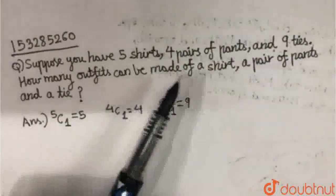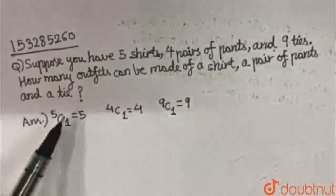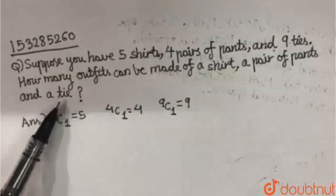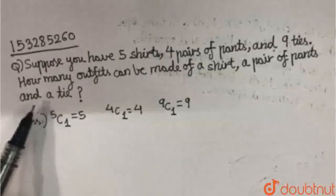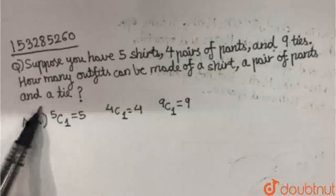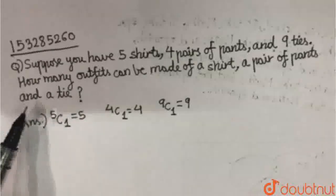Now it is saying that we have to combine a shirt, a pair of pants, and a tie. This can only be combined because it is written AND. So we have to take all three at once. In combination, wherever there is an AND we have to multiply. With OR we add. With AND we multiply.